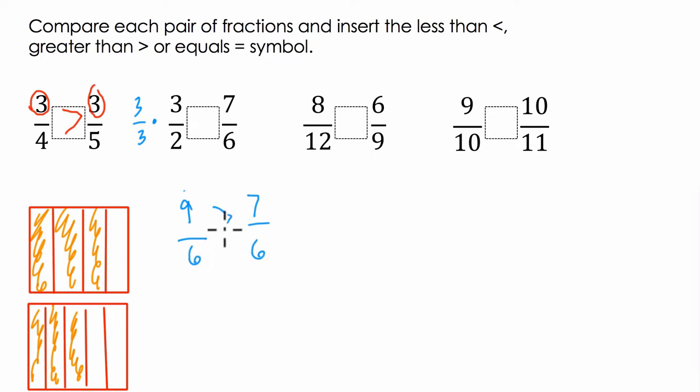Now it's easier to compare. Nine-sixths is larger, because if you have sixths, if you have nine of them, this is saying you have nine one-sixths, that must be larger than seven one-sixths. So this is a larger fraction.